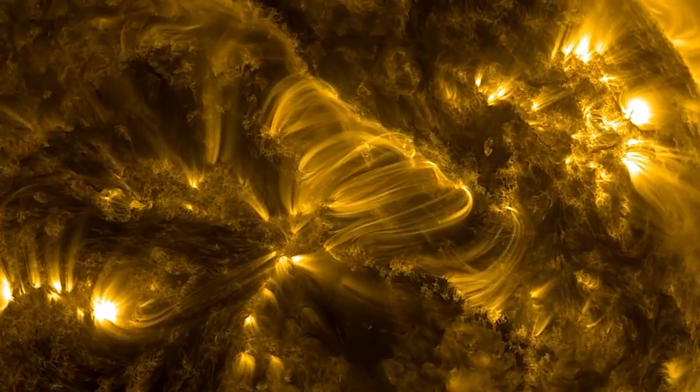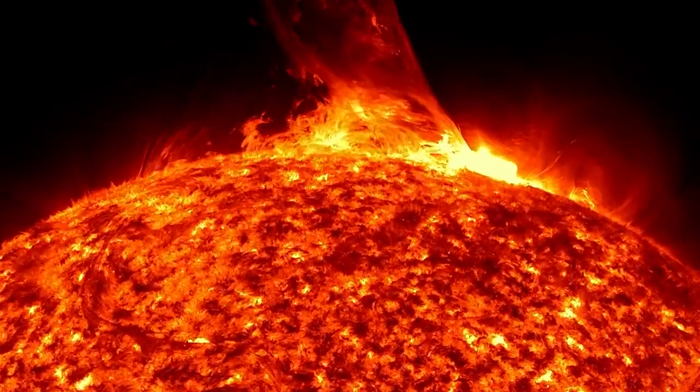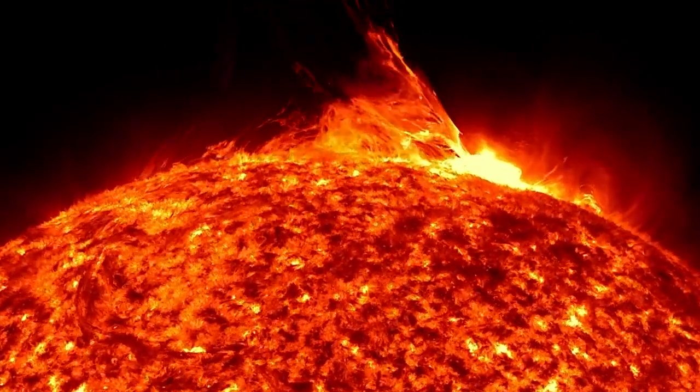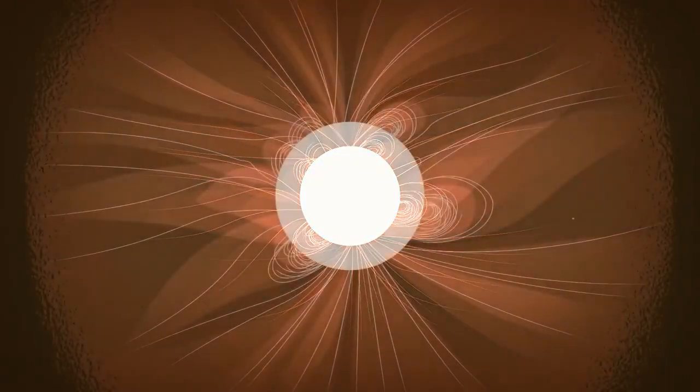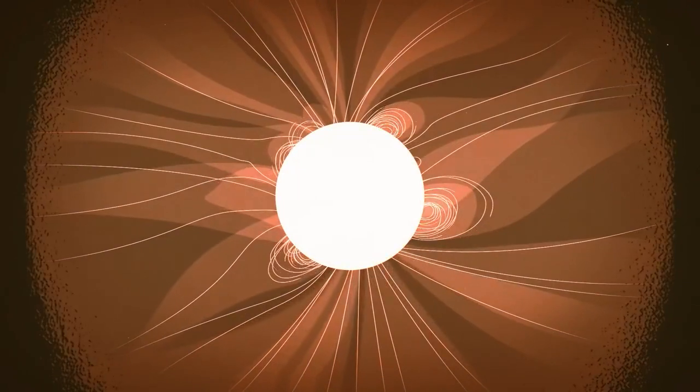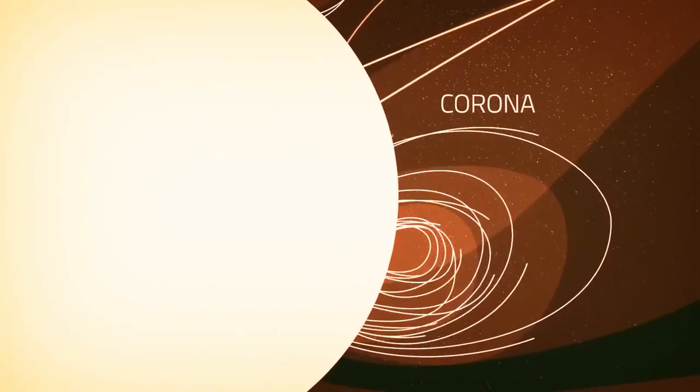Unlike Earth, the sun doesn't have a solid surface. It's a giant ball of hot plasma that's held together by its own gravity. Solar material flows out from the surface, but around the sun, it's bound by the sun's gravity and magnetic field. This material forms the sun's atmosphere, the corona.